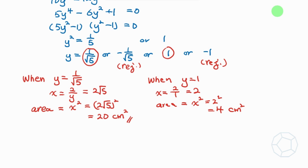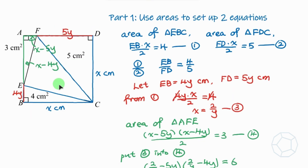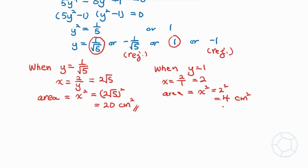However, the value of 4 cm² is impossible. Referring to the figure, the area of the square must be at least 3 + 4 + 5 = 12 cm², so 4 is too small and must be rejected. Hence the final answer is: the area of the square is 20 cm².